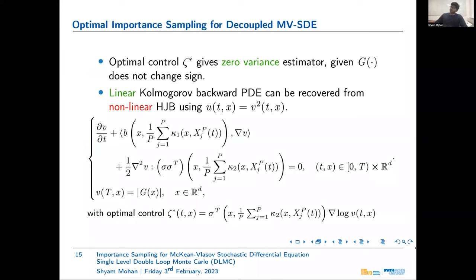Importantly, the optimal control we derived actually gives a zero-variance estimator, given that our observable G does not change sign. We can see this by the following transformation: the function V, which is the square of our value function U, turns out to solve the linear Kolmogorov backward PDE, which gives the first moment. Since U minimizes the second moment, when the second moment equals the square of the first moment, the estimator has zero variance.